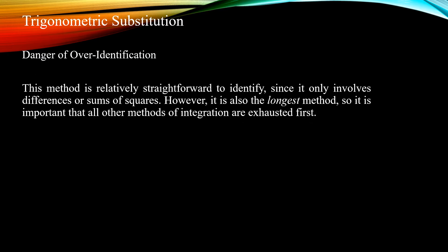Here's the danger: because every difference or sum of squares can be solved with trigonometric substitution, there's a tendency for students to over-identify this method. You have to make sure you've exhausted the possibility of the integral leading to inverse sine or inverse tan, because even though those integrals can also be solved with trigonometric substitution, trigonometric substitution is much longer. So make sure you've identified that the other methods don't apply.